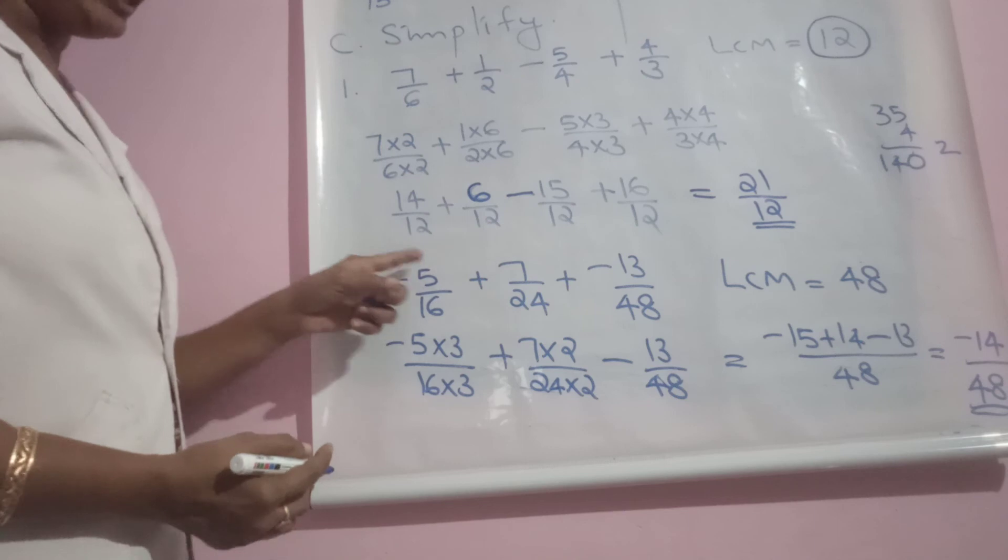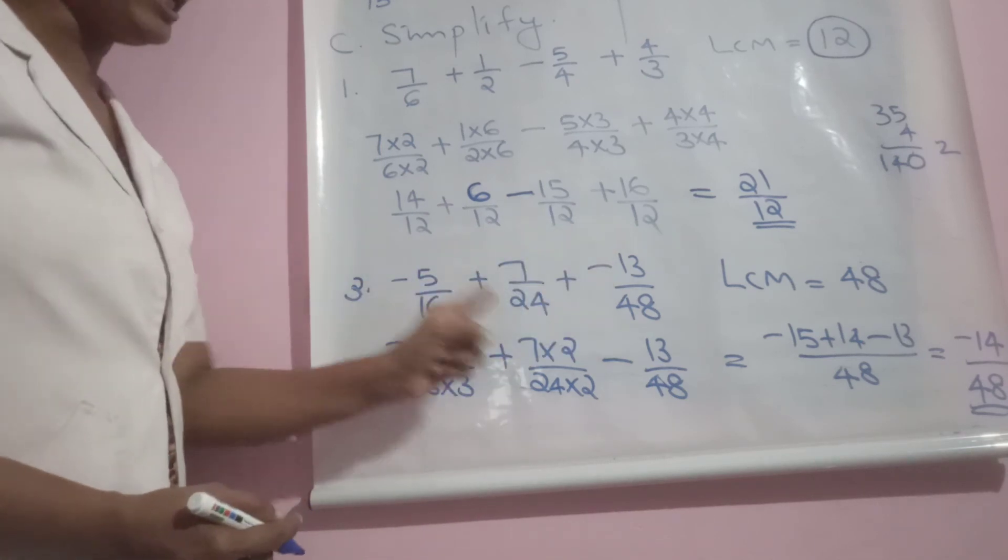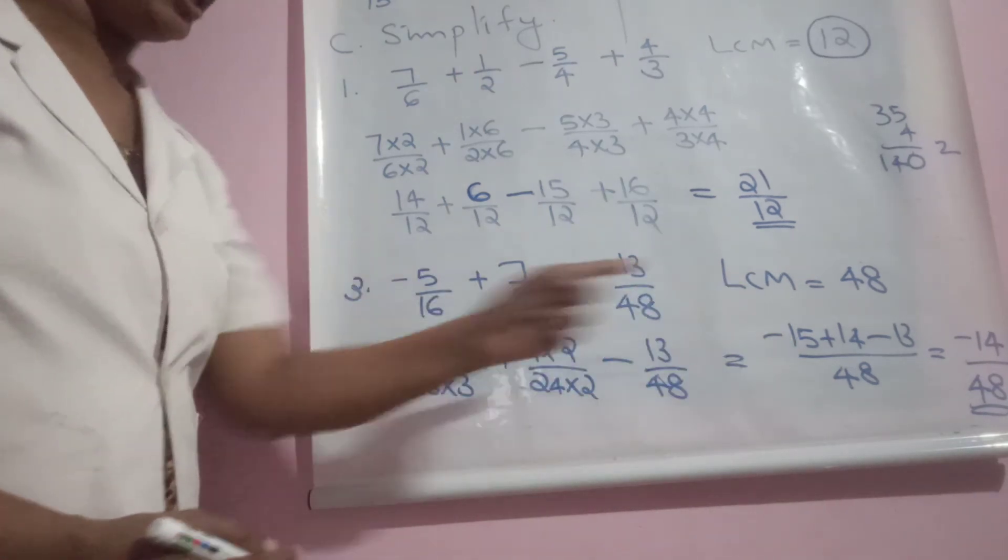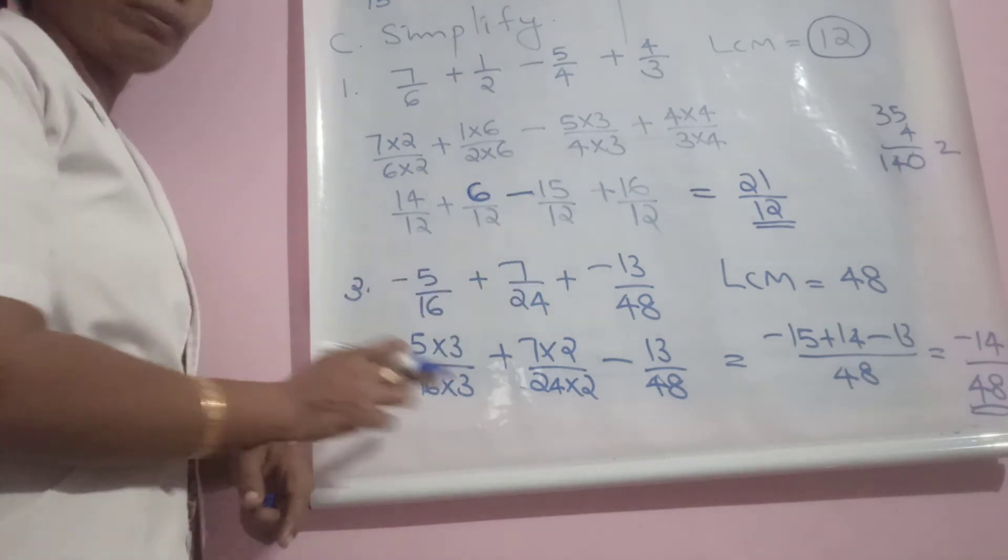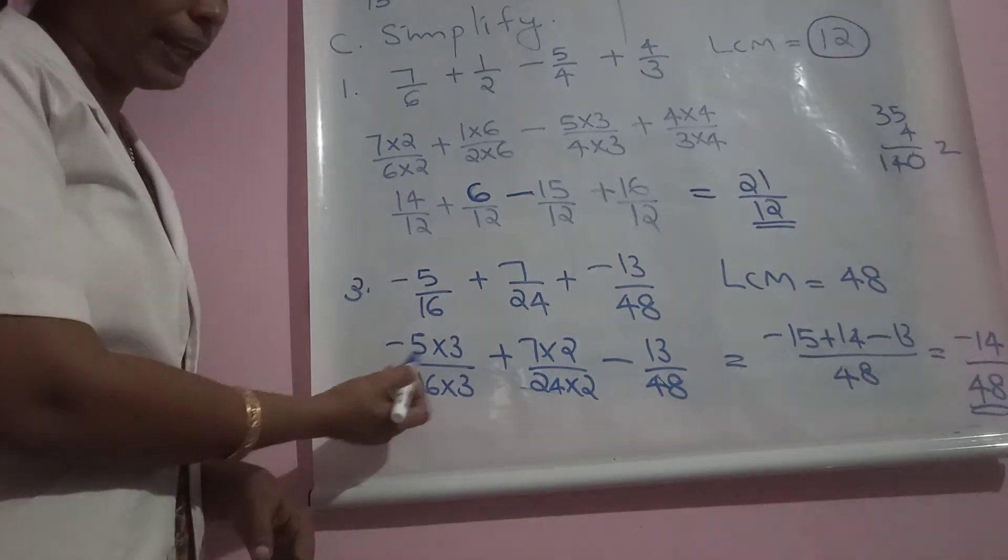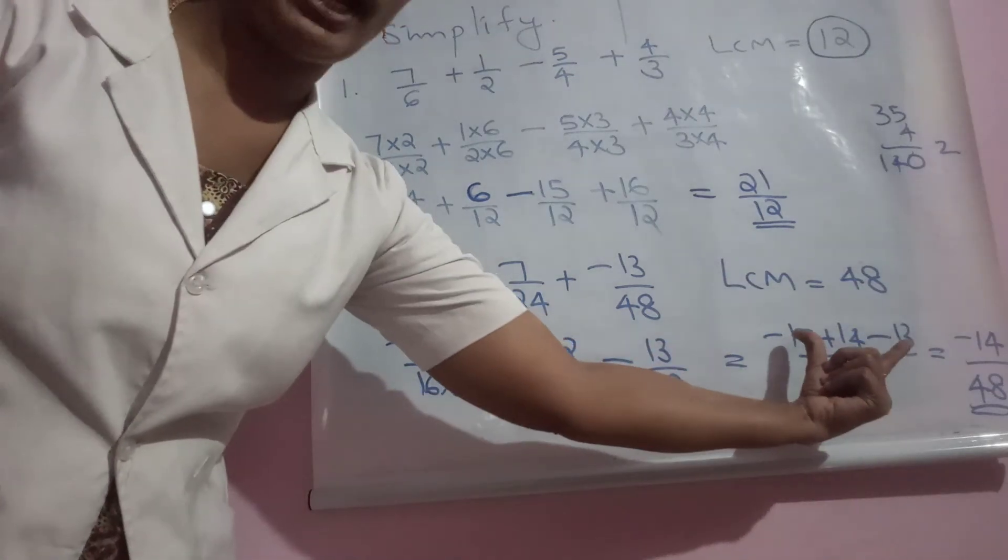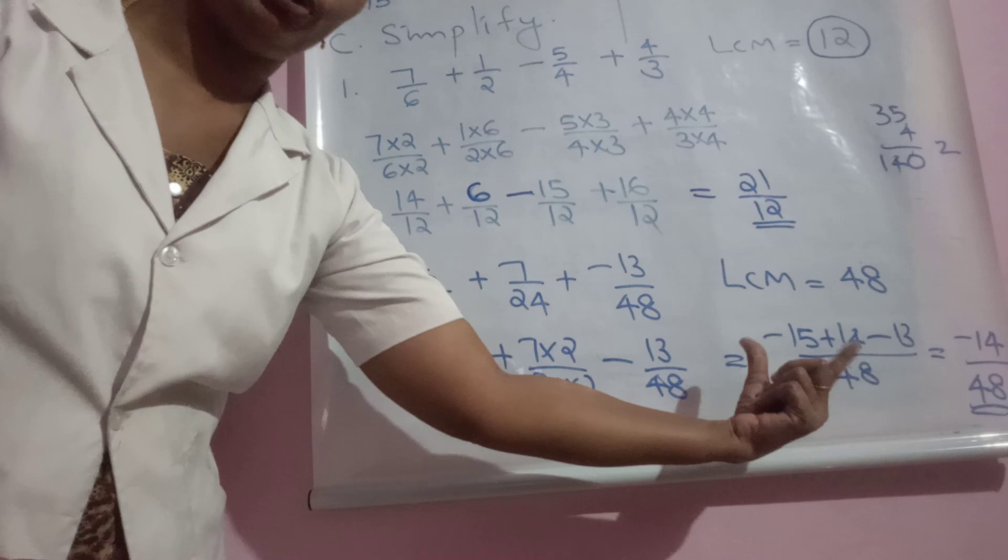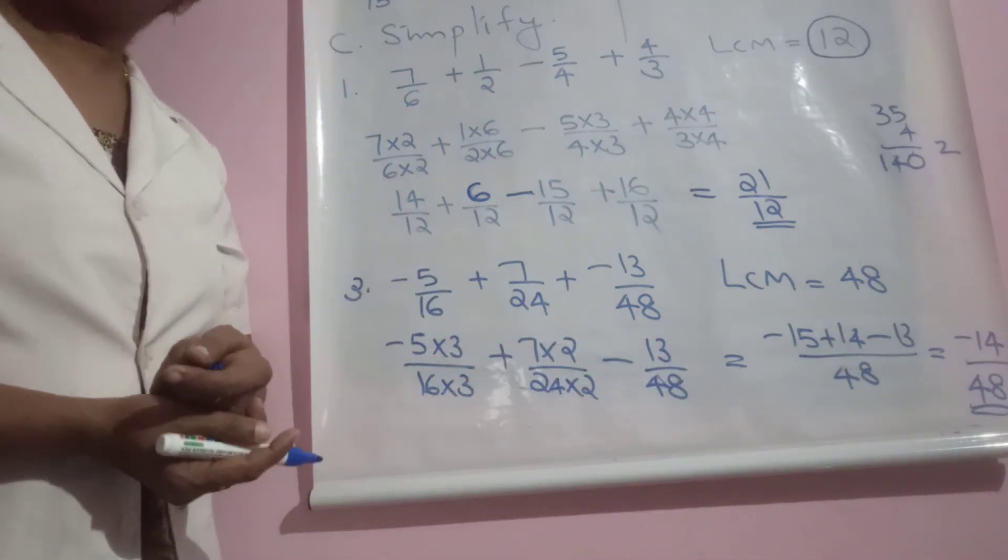Third question: negative 5/16 plus 7/24 minus 13/48. LCM of the three is 48. 16 to make 48 is into 3, 24 to 48 is into 2. There is no change needed for 48. So let us consider: minus 15 plus 14 minus 13. Two negative numbers you add, then subtract 14. Negative numbers will give negative 28, plus 14 will give you minus 14/48.